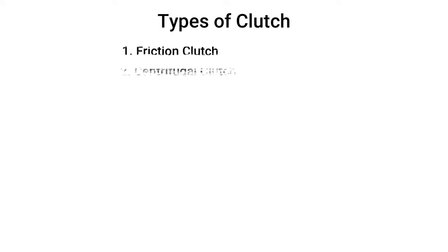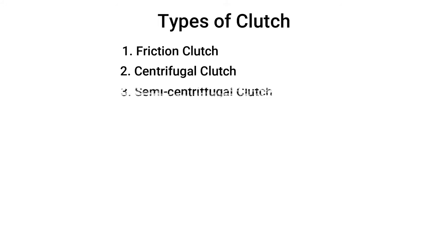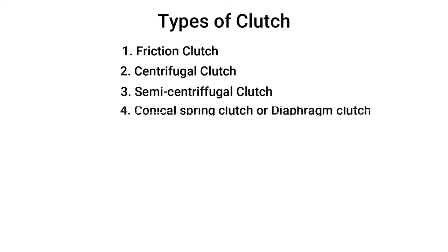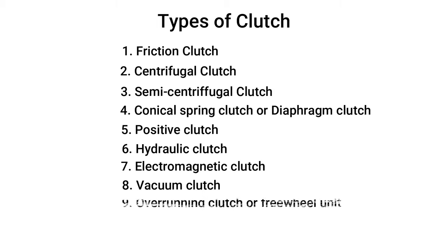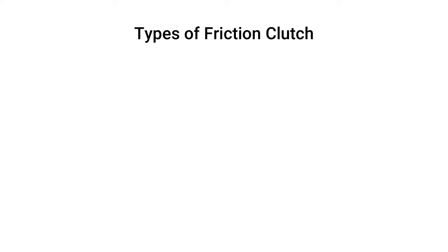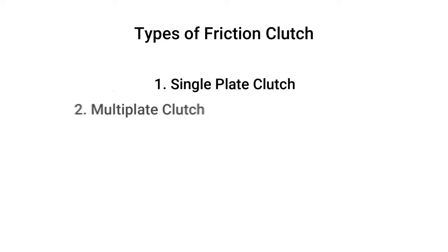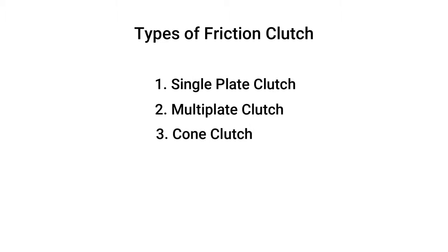The types of clutches include: friction clutch, centrifugal clutch, semi-centrifugal clutch, conical spring clutch or diaphragm clutch, positive clutch, hydraulic clutch, electromagnetic clutch, vacuum clutch, and overrunning clutch or freewheel unit. Friction clutch is further classified into three types: single plate clutch, multi-plate clutch, and cone clutch.